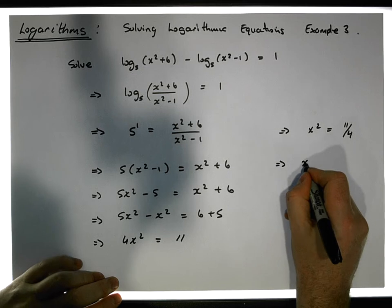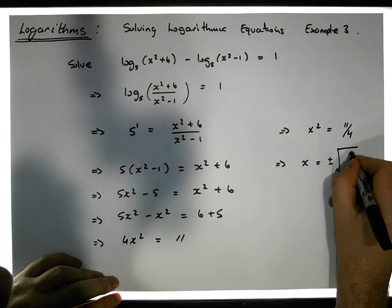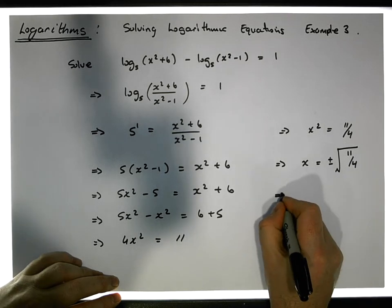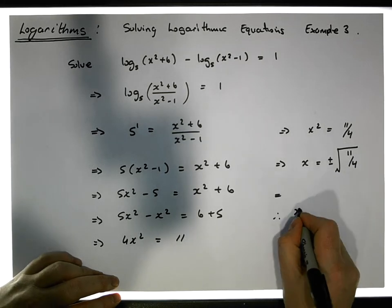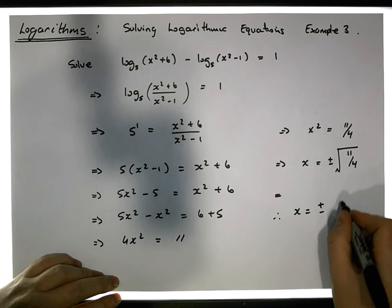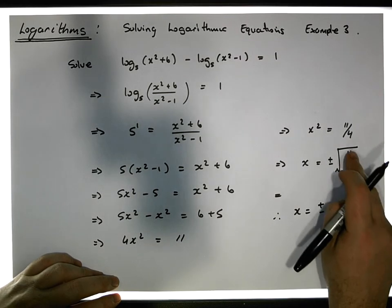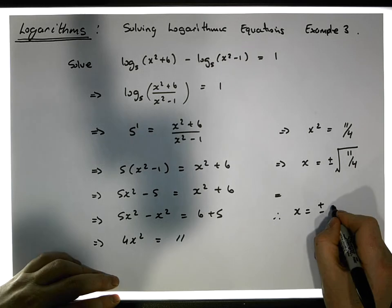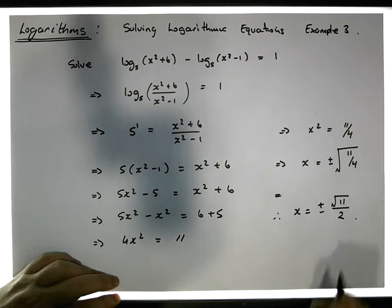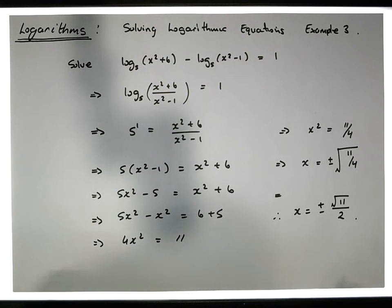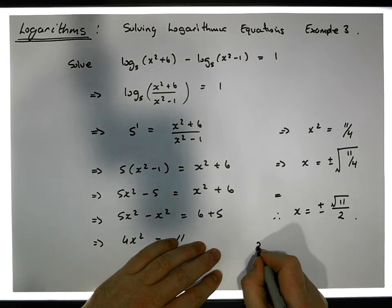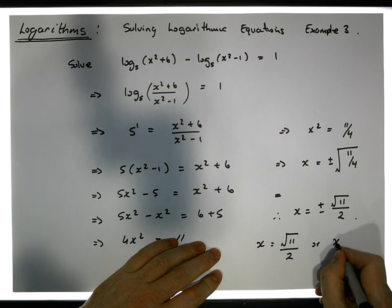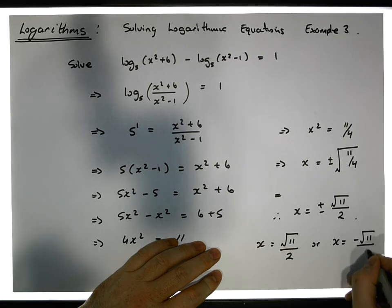This implies that x squared is equal to 11 over 4. We can solve this: x is equal to plus or minus the square root of 11 over 4. The square root of 11 over 4 is the same as the square root of 11 divided by the square root of 4, which is 2. So x equals plus or minus the square root of 11 over 2.